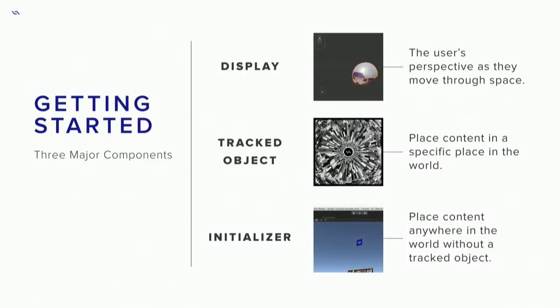Let's talk about the main components and paradigms in the SDK. The big ones are the display, the tracked object, and the initializer. The display represents the user's perspective as they move through space. The tracked object represents something that is interesting in the world — it doesn't have to be an image, but if I want to display content relative to something, I can use it to localize to the space. If I have this on the table and I want to augment something on those water bottles, I know because of where this is and where those are how to draw that content. If I don't need something anchored in space, I can use the initializer, which just drops content in front of you or relative to the user in some way.